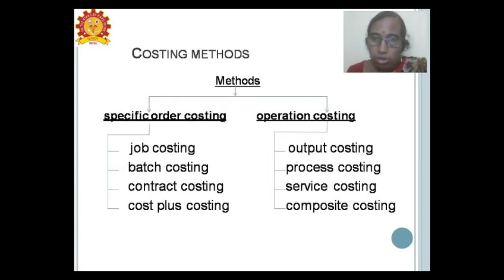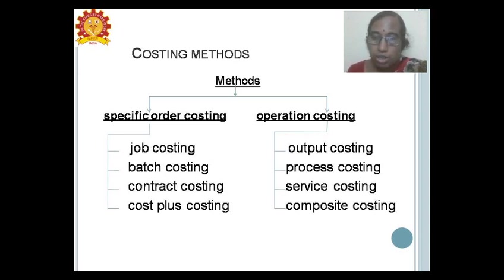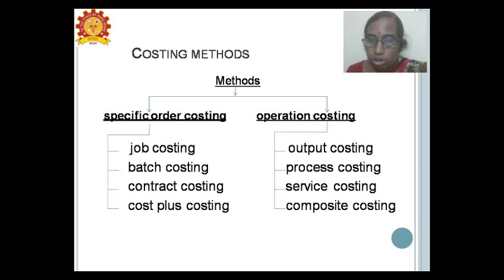The various methods of costing include specific order costing and operational costing. In specific order costing, we have job costing, batch costing, contract costing, and cost plus costing — ascertaining cost per job, per batch, on a contract basis, and cost plus basis. In operational costing, we have output costing, process costing, service costing, and composite costing.